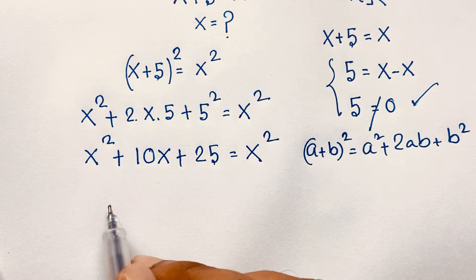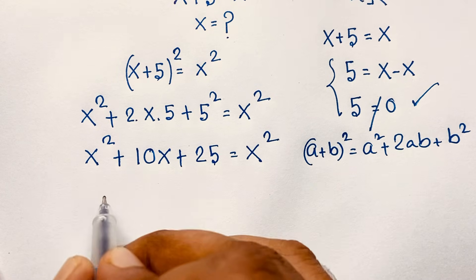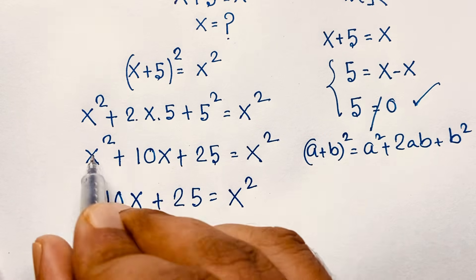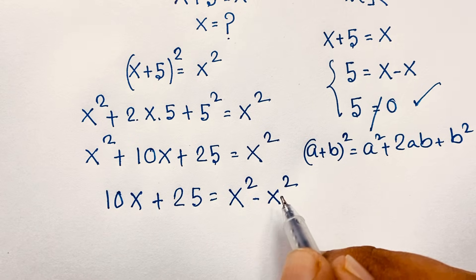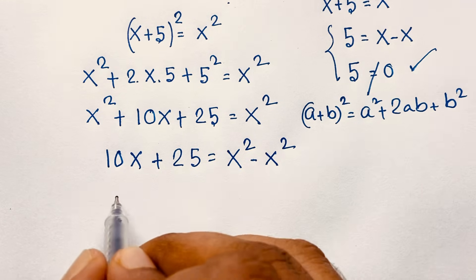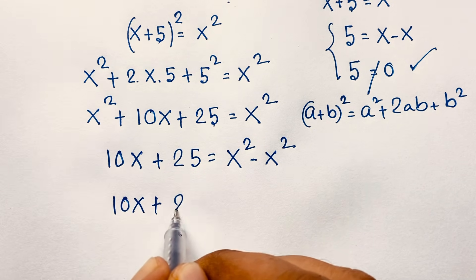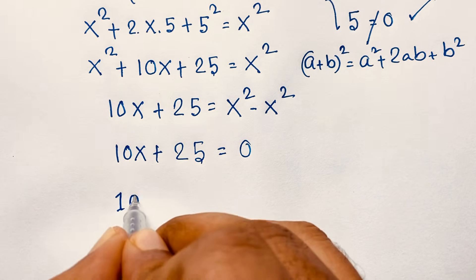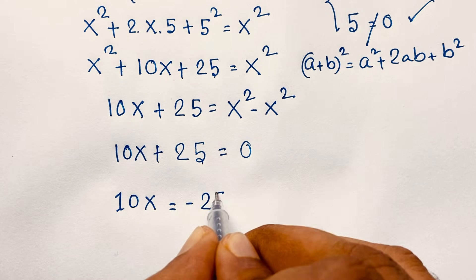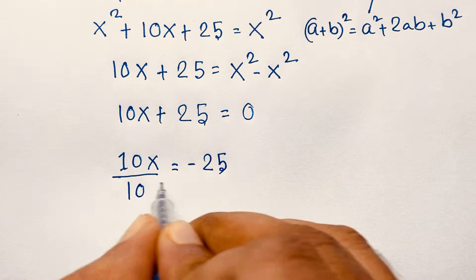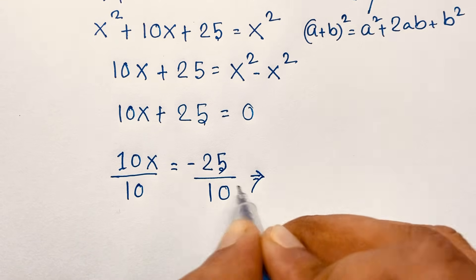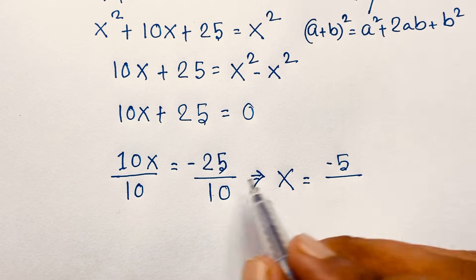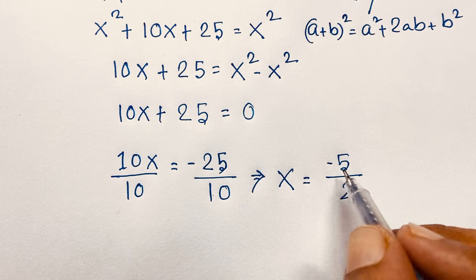So we have 10x + 25 = 0. If I move 25 to the other side, it becomes negative 25: 10x = -25. Now I divide both sides by 10, the 10s cancel, and we find x. Dividing -25 by 10 — simplifying by 5 — gives us x is equal to -5 over 2.